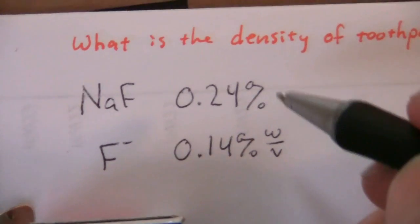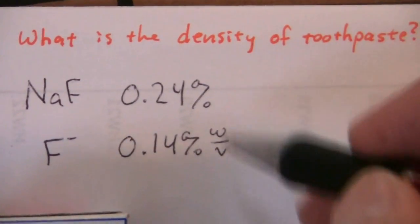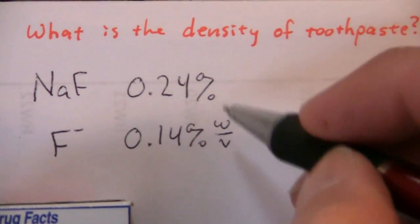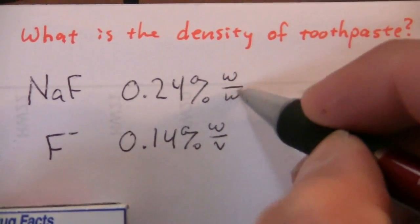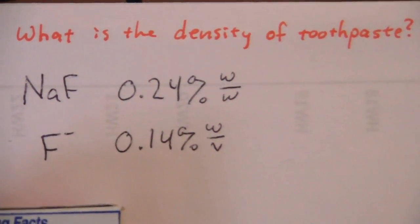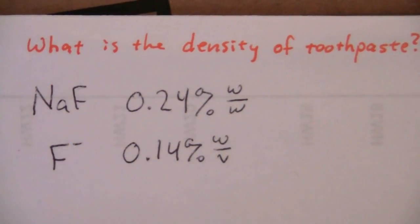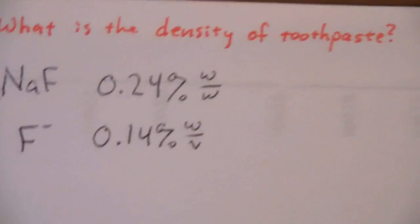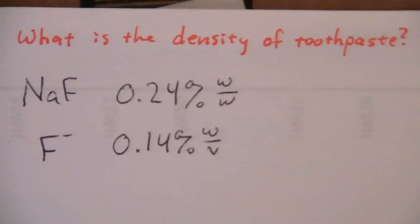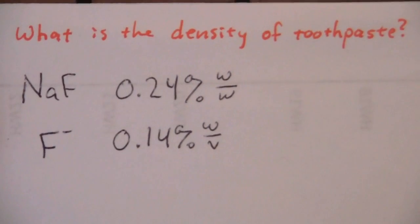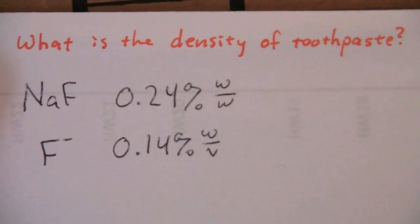This one didn't specify whether it was weight volume or what, so we assume that it is weight weight. That is the standard form for percent, the mass percent. So if it's not specified, we generally assume that it is mass percent.